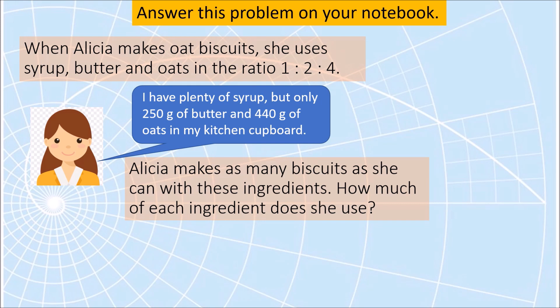Alicia makes as many biscuits as she can with these ingredients. How much of each ingredient would she need? Like in any word problem you have to start by identifying what is given and what information you will need to answer the question. We are given the ratio of syrup to butter to oats which is 1 is to 2 is to 4. Notice that butter is twice the syrup and oats is twice the butter.